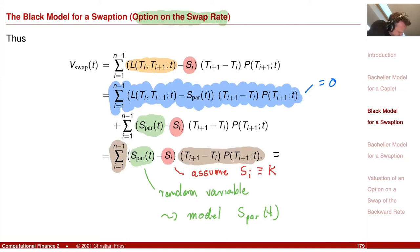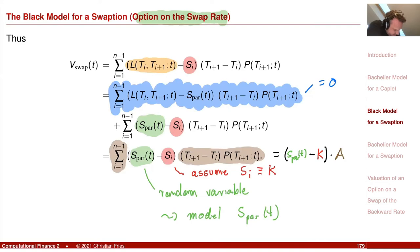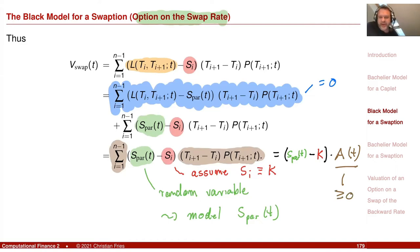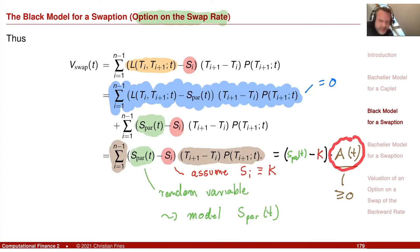We have that this equals paying the par swap rate observed in T1 minus K, multiplied with the swap annuity. The swap annuity is positive. So when we take the maximum of this and zero, it becomes the maximum of (par swap rate minus K) times the swap annuity and zero — exactly the same form as for the Caplet. The financial product is exactly associated with how the swap is paying.